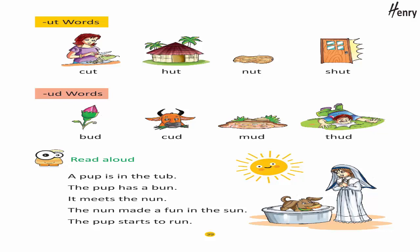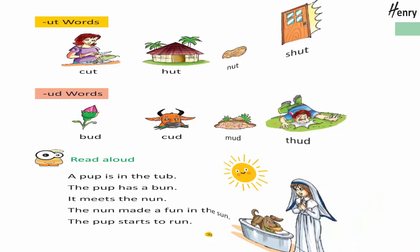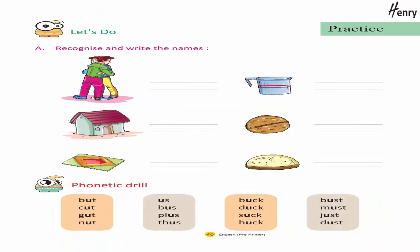Read aloud: A pup is in the tub. The pup has a bun. It meets the nun. The nun made fun in the sun. The pup starts to run.